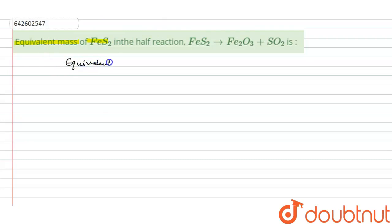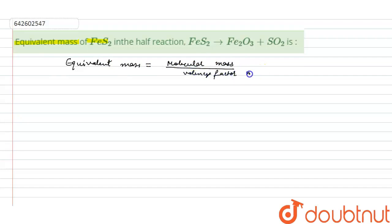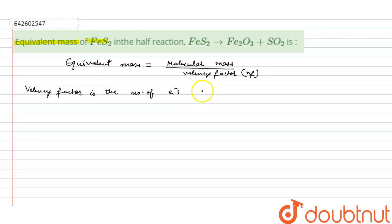Equivalent mass is equal to molecular mass divided by the valency factor, that is n-factor. The valency factor is the number of electrons lost or gained in the redox reaction.